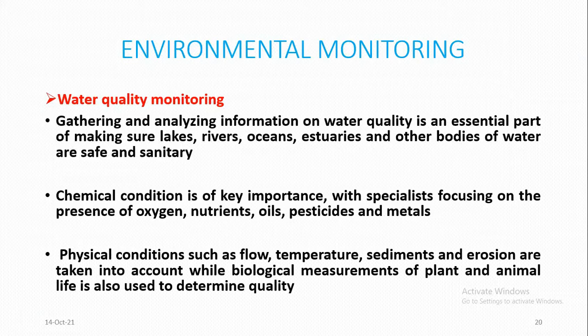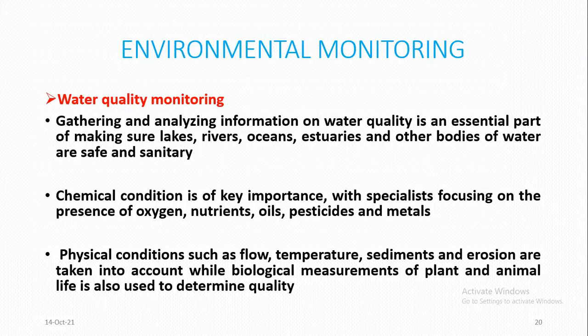Water quality monitoring: Gathering and analyzing information on water quality is an essential part of making sure lakes, rivers, oceans, estuaries, and other bodies of water are safe and sanitary. Water quality chemical condition is of key importance, with specialists focusing on the presence of oxygen, nutrients, oils, pesticides, and metals. Physical conditions such as flow, temperature, sediments, and erosion are taken into account, and biological measurements of plants and animal life are also used to determine quality.